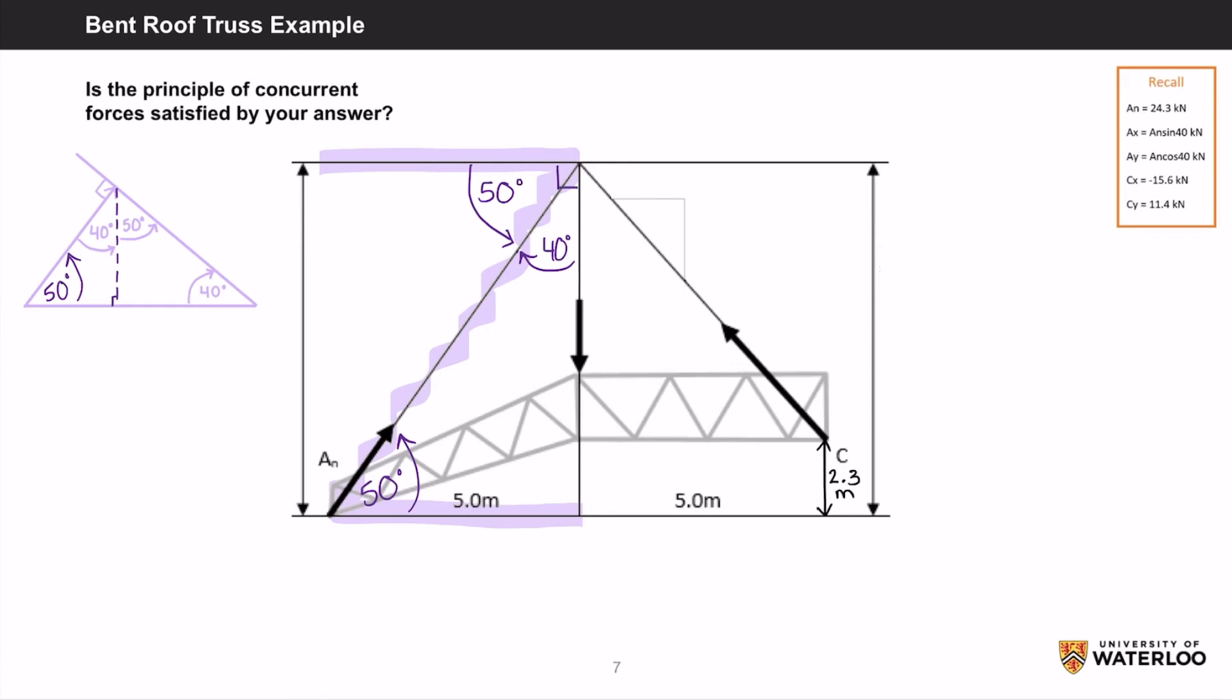One method we can use to see if all the forces intersect is to compare the height at which AN and the point load intersect as well as find the height at which C and the point load intersect. If they are the same height, then that means they satisfy the principle of concurrent forces. Let's call the height line P.